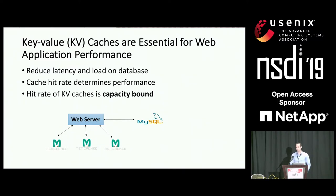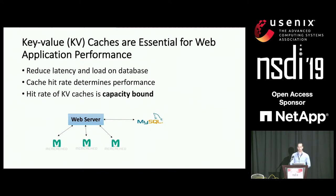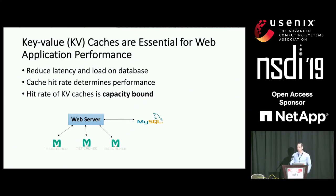Key-value caches today are a crucial layer in modern web applications. The typical architecture has a web server that first accesses the cache, like memcached, and only if the object is not there does it access a slower, persistent database like MySQL. The caches usually sit in a separate cluster and they use DRAM to store their data. They are important because they are faster and also reduce load on the database.